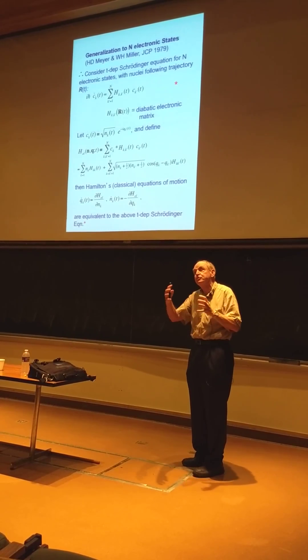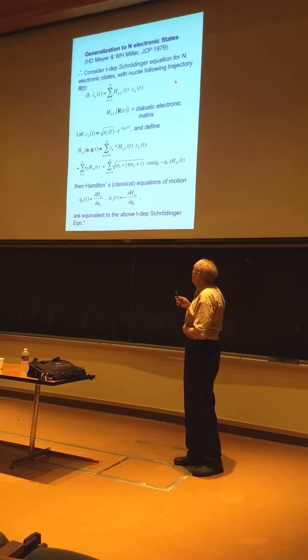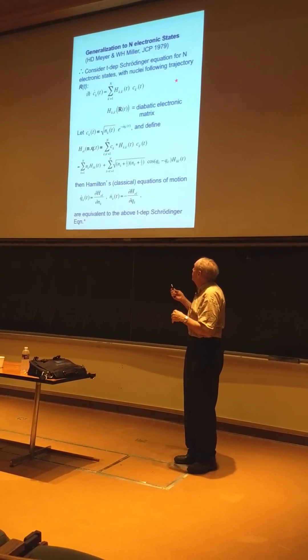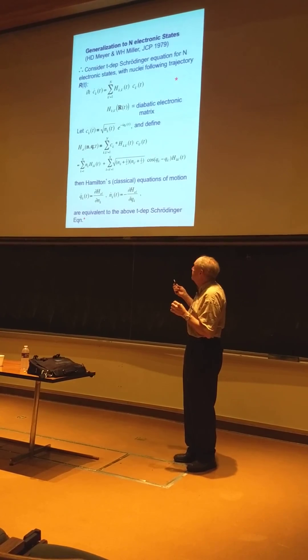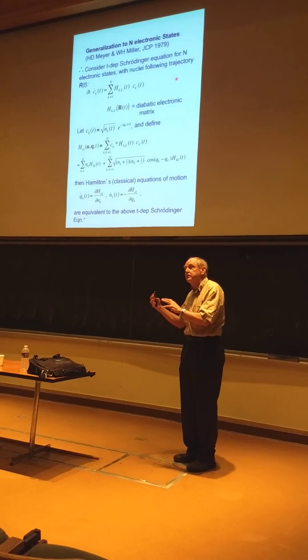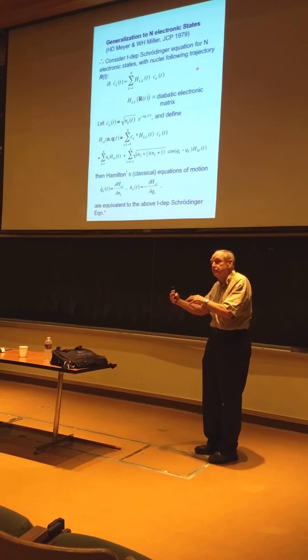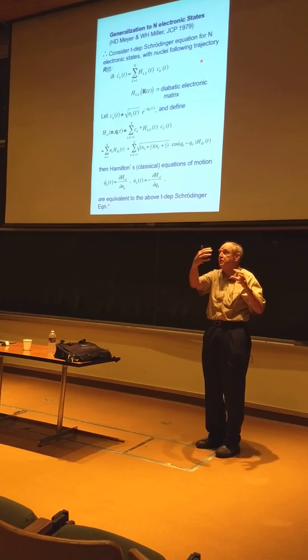So, now we have an ensemble of trajectories. So if we have, start one initial state, we have n, and then we have n phases to choose. And then we integrate, we choose, do that a thousand times to generate an ensemble of trajectories.